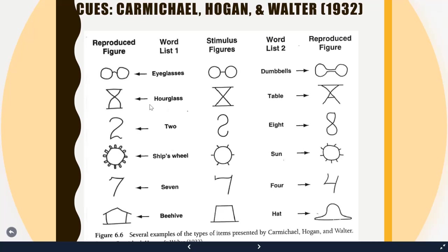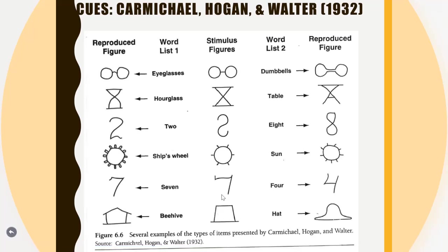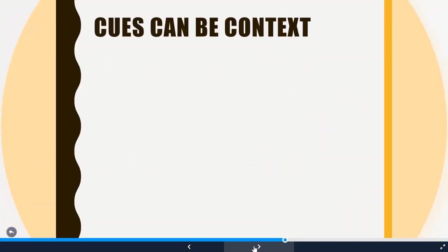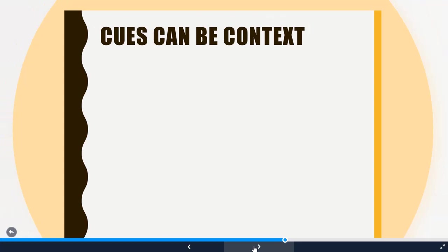They distort the image consistent with 'eyeglasses' or 'dumbbells.' The X with two lines: if given 'hourglass' you tend to bend the lines like an hourglass; if given 'table' you make it look like a table. A ship's wheel label causes people to draw spokes; 'sun' produces wavy radiating lines. If our memory were photographic we wouldn't have these distortions based on cues, but we do. Cues can also be the context in which you learn the information.